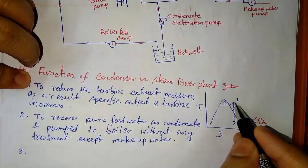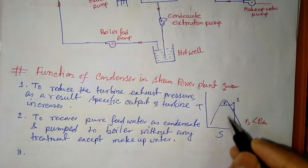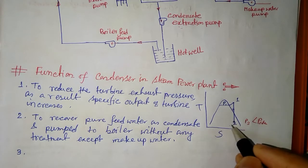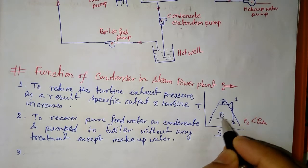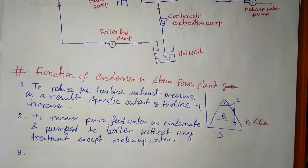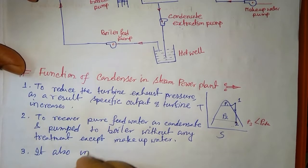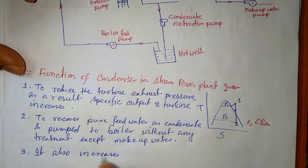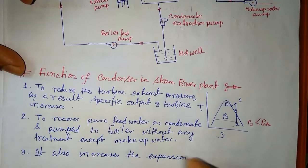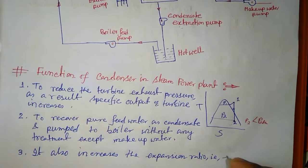The condenser also increases the expansion ratio. If the pressure range between P1 and P2 increases, the ratio P1/P2 becomes larger, and as a result efficiency also increases. So it increases the expansion ratio and thereby increases the efficiency.